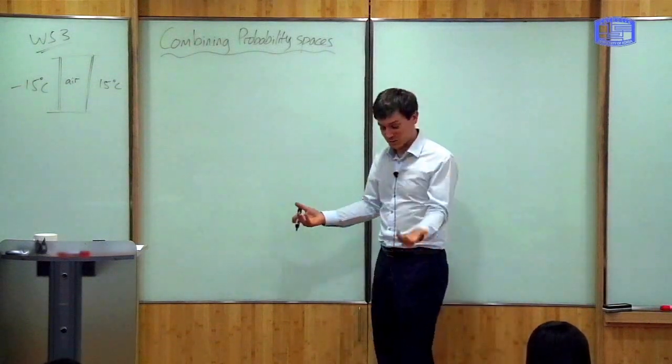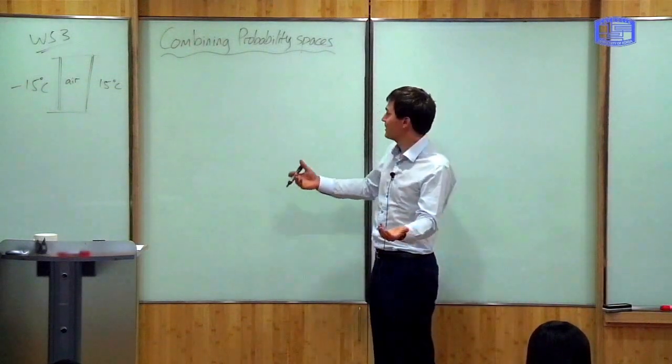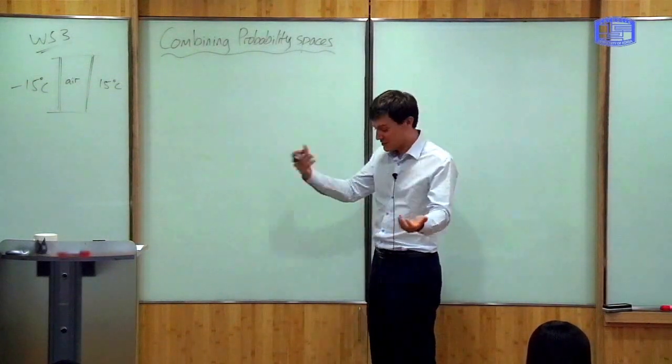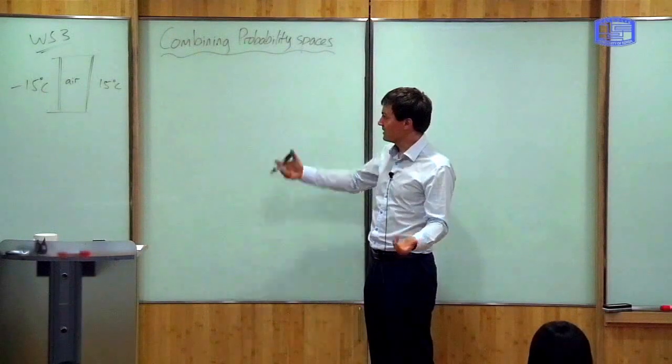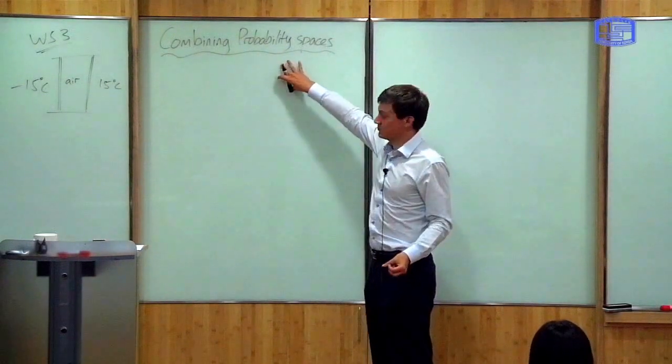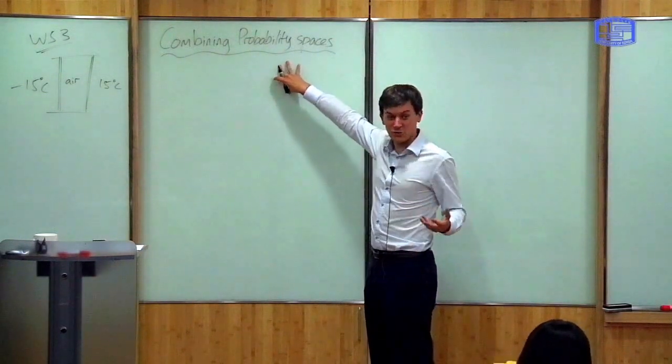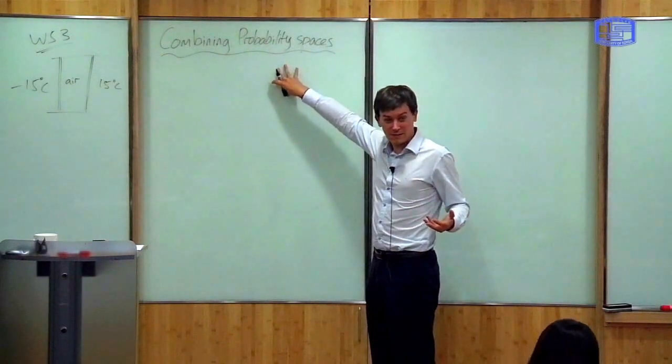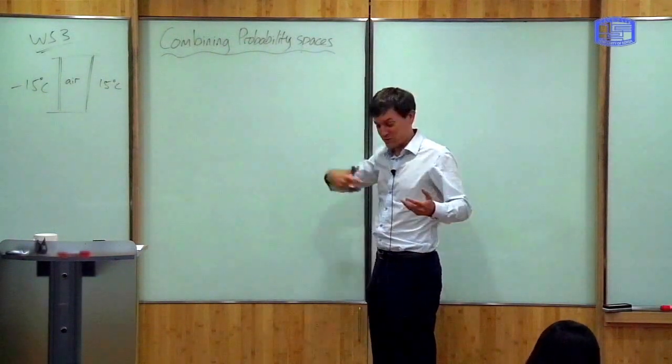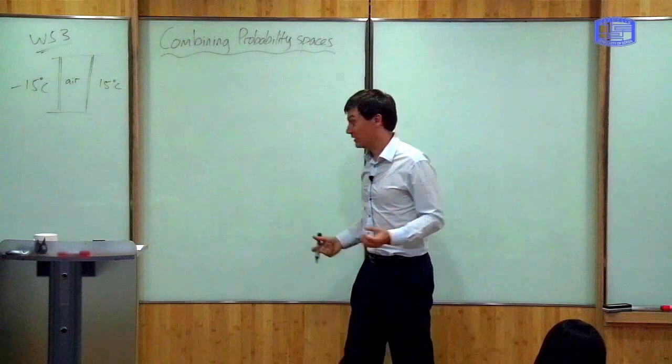I've got one probability space for the first dice and one for the second, and I can combine them to make a joint probability space of the total result.